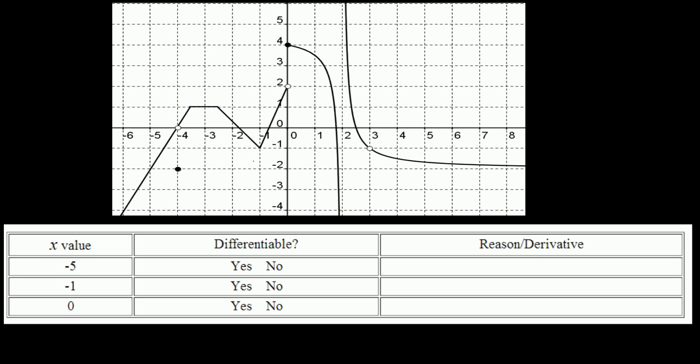At x equals negative 5, here is negative 5 and the point on the curve is here. Near this point we have a straight line, so the derivative exists. Yes, because we can find the derivative of this straight line by simply finding rise over run.